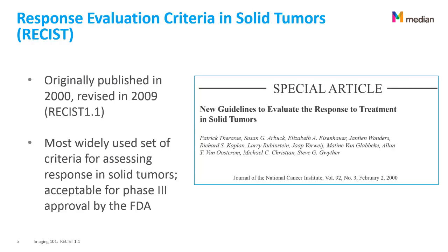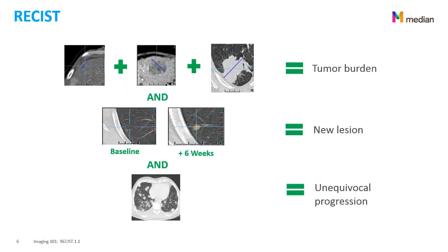RECIST was originally published in 2000 and revised in 2009. It is the most widely used set of criteria for assessing response in solid tumors, and the only one currently validated by the FDA. There is a limitation of five lesions per patient and two lesions per organ. We report the longest dimension of each lesion under study and record the total tumor burden as the sum of all diameters.